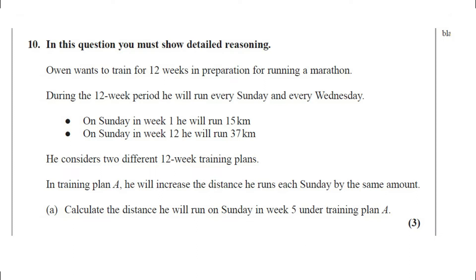Question number 10. O1 wants to train for 12 weeks in preparation for running a marathon. He will run every Sunday and every Wednesday. On Sunday in week 1, he runs 15 kilometres; on Sunday in week 12, he runs 37 kilometres. He considers two different 12-week training plans. Part A: in training plan A, he increases the distance each Sunday by the same amount. Calculate the distance he runs on Sunday in week 5. The question carries 3 marks.